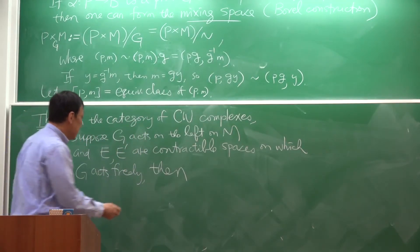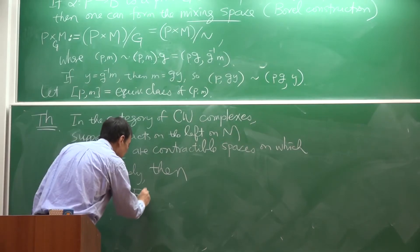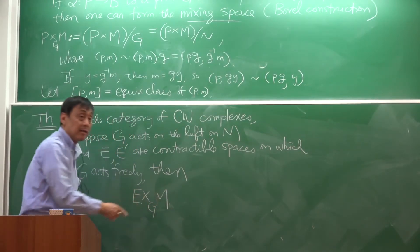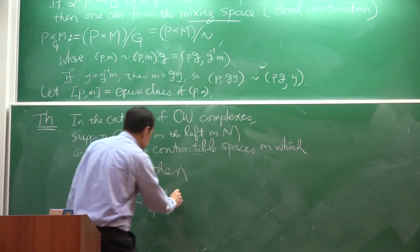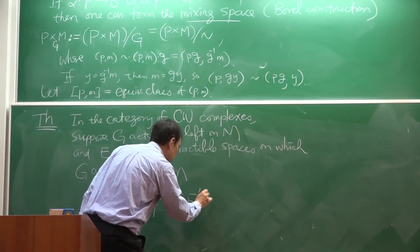suppose G acts on the left on M, and E and E prime are contractible spaces on which G acts freely, then when you form the mixing spaces, that's actually the homotopy quotient, right?